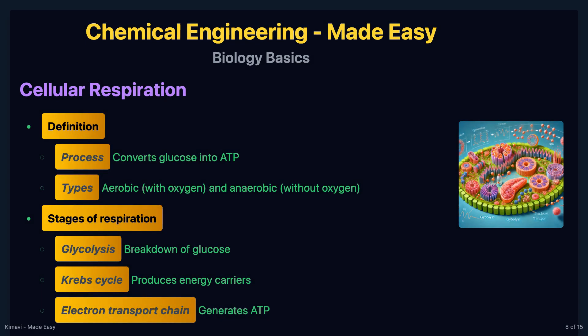Cellular respiration converts glucose into energy in the form of ATP. It includes three main stages: glycolysis, where glucose is broken down; the Krebs cycle, which produces energy carriers; and the electron transport chain, which generates ATP. Aerobic respiration requires oxygen, while anaerobic respiration occurs without it.